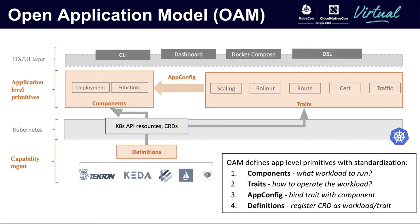OAM defines four application-level primitives for Kubernetes in a standardized approach. First, components — it's all about what workloads you want to deploy. In most cases they are Kubernetes deployments, but they can also be functions or your own Kubernetes operators. The second concept is traits, which define how to operate the workloads. Auto-scaling, rollout, and traffic management are all examples of traits. Some are provided out of the box by Kubernetes, but most come from the ecosystem with CRDs and operators.